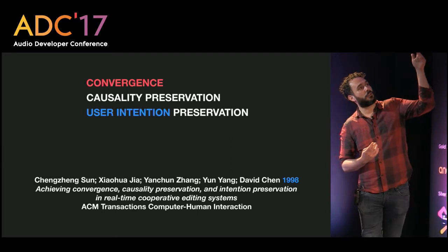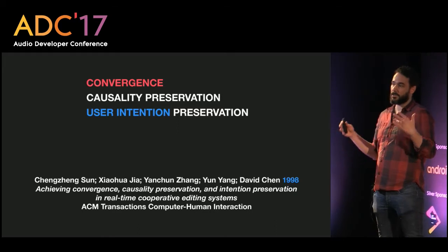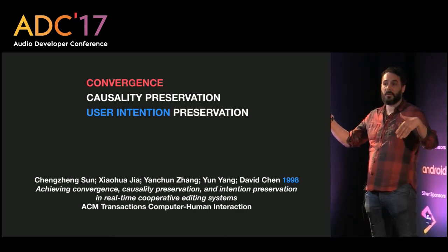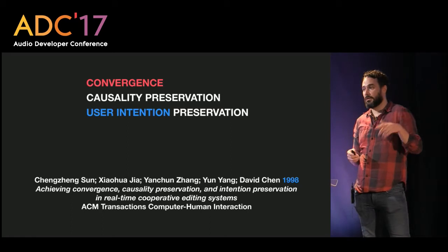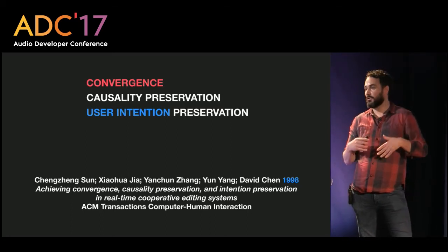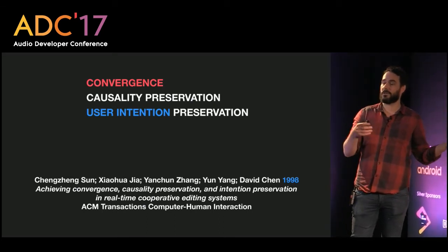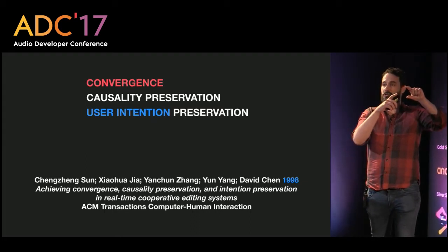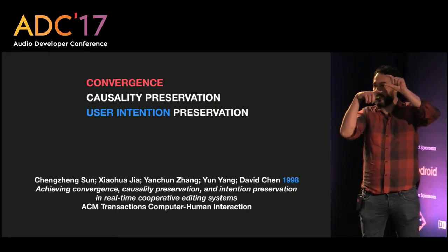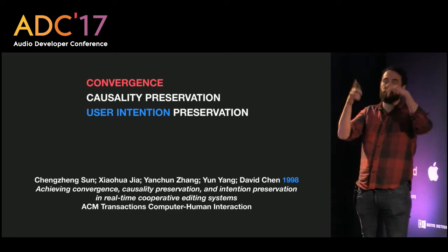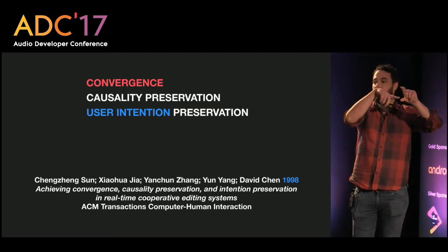CCI stands for Convergence, Causality, and Intention. Convergence means that if two people are collaborating and stop making changes, their two documents will eventually be in sync. Causality preservation is handled automatically by flip. User Intention Preservation means, for example, that if a user intends to insert one track between two tracks, that track should not appear after those tracks due to a concurrent edit.